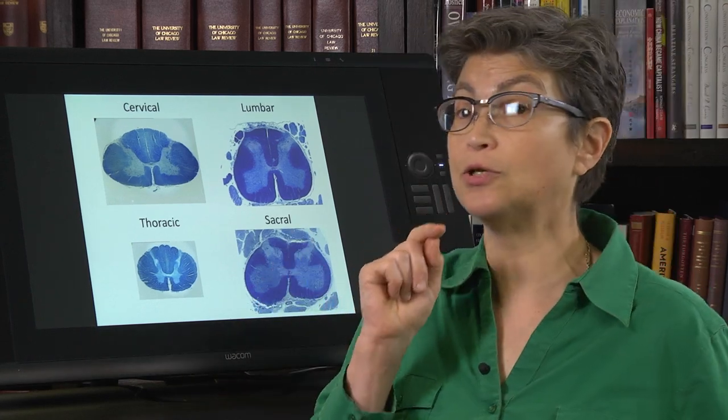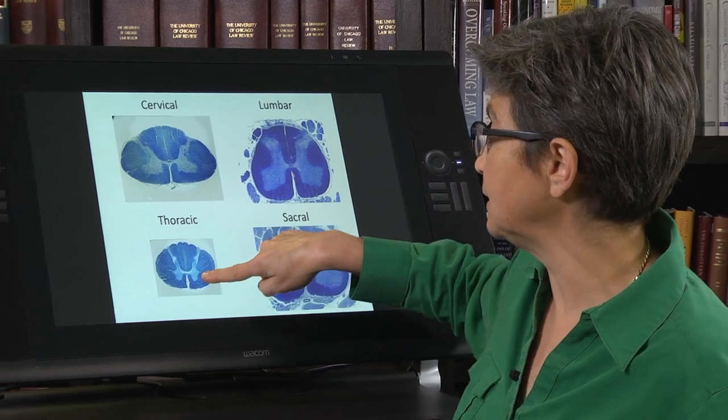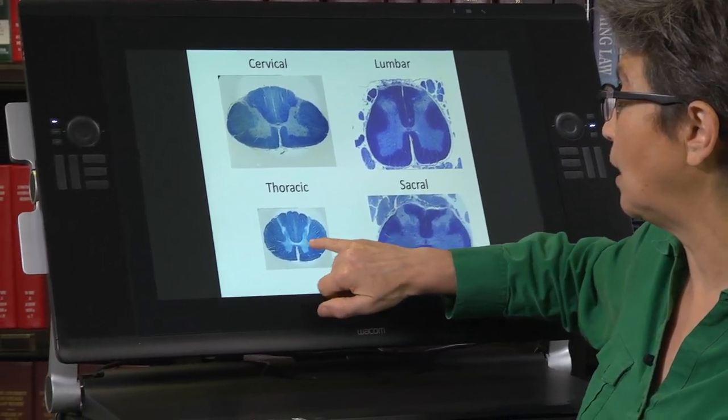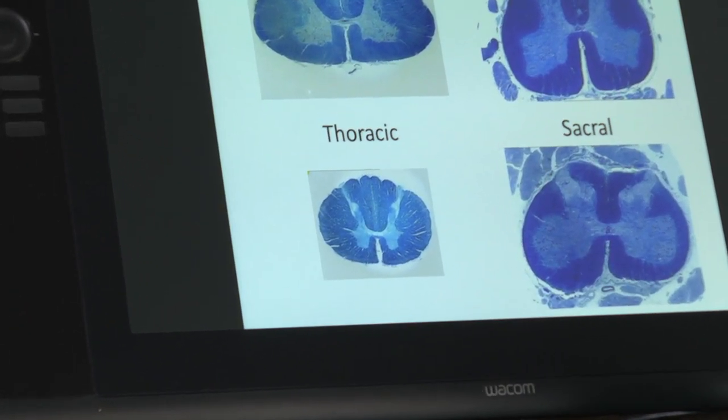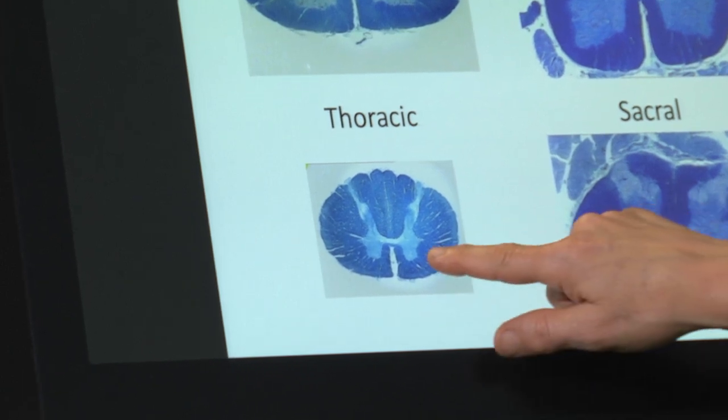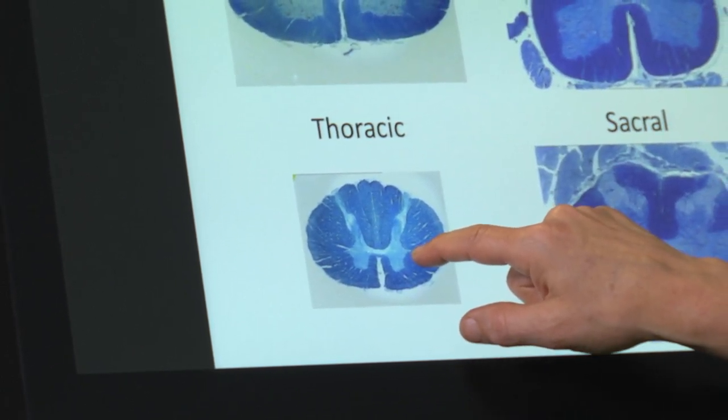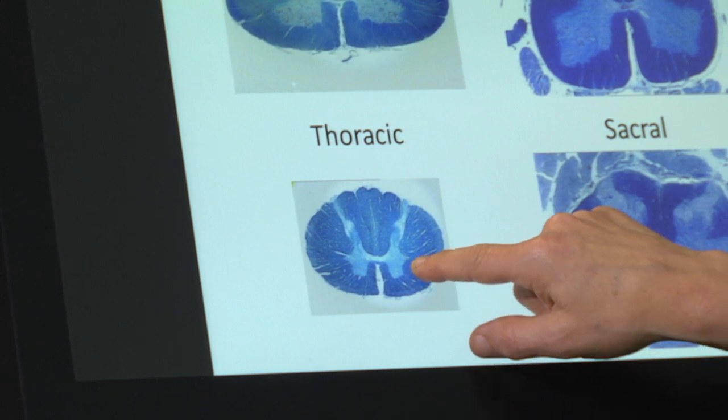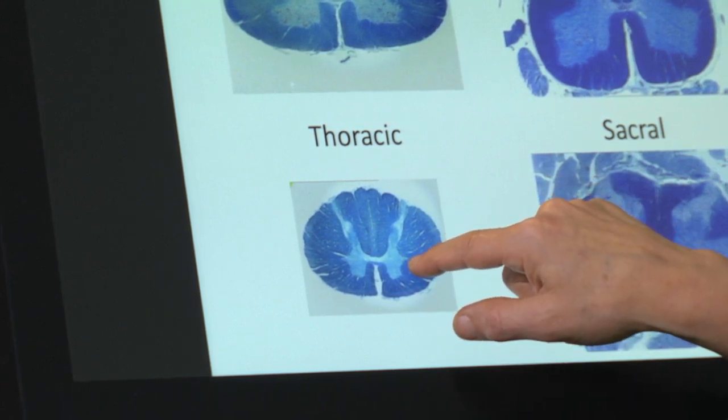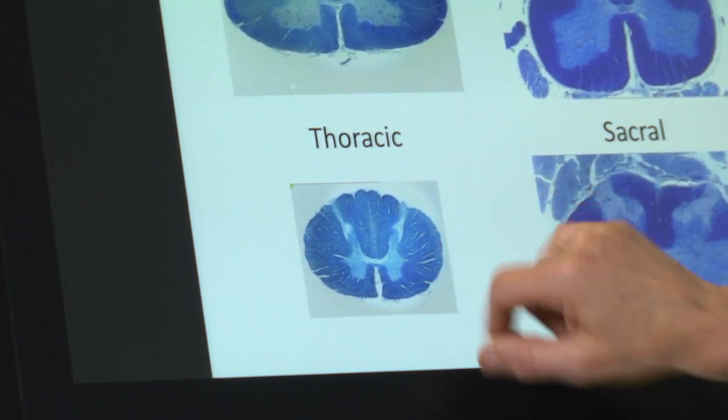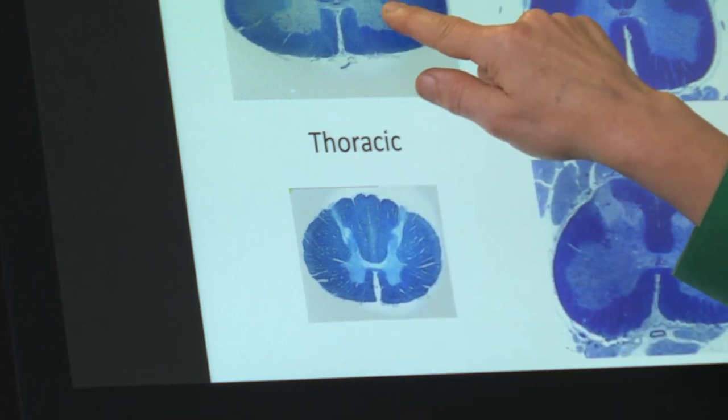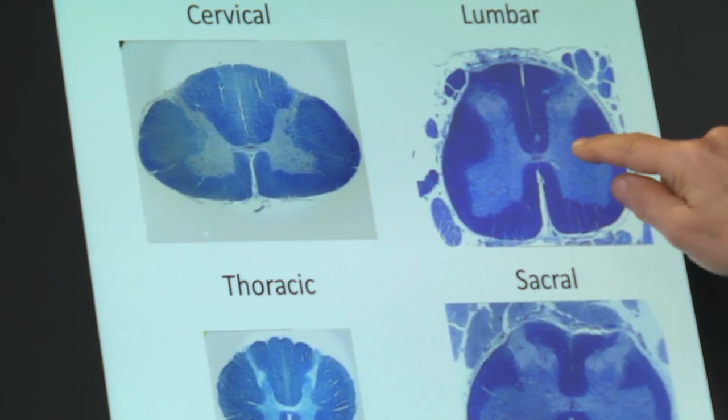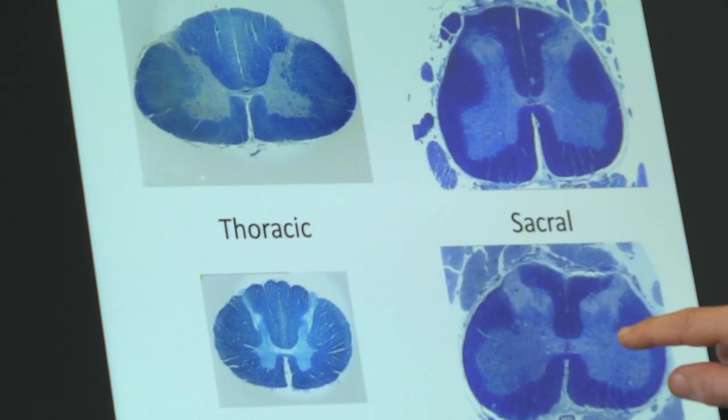Let's look at another feature. This little outpouching, I introduced it last time as the intermediolateral cell column—yes, that's a mouthful, or IML. The intermediolateral cell column, another name for it is the lateral horn. And this contains the preganglionics of the thoracic cord. And it is very obvious. It is not present in the cervical cord. It is not present in the lumbar cord or even in the sacral cord.